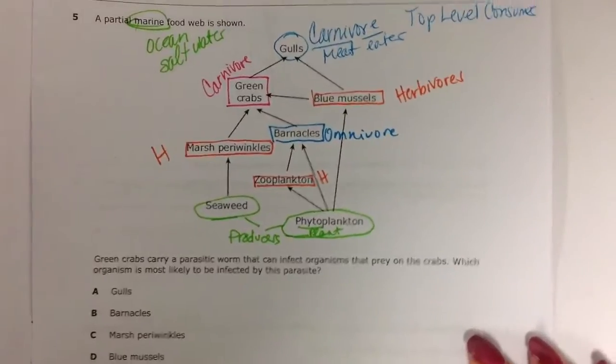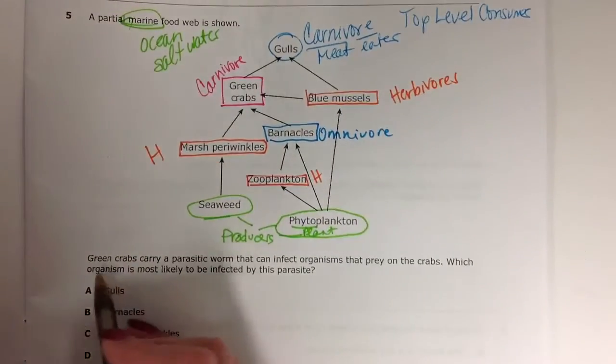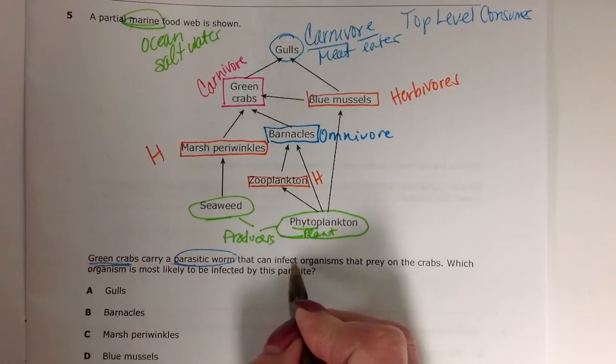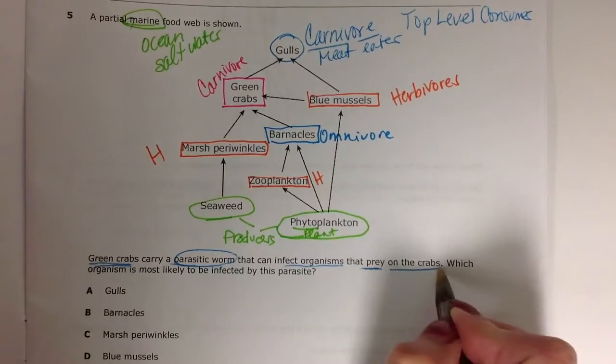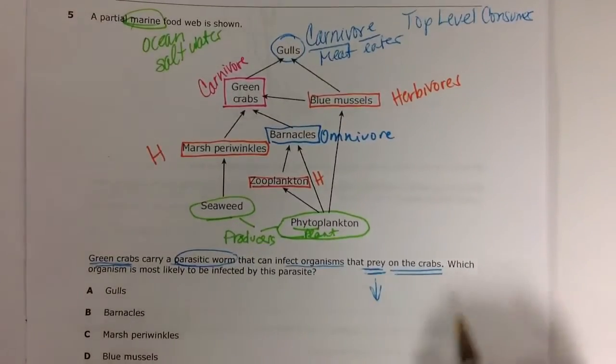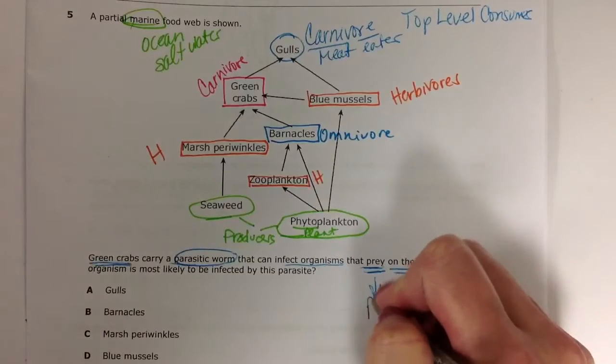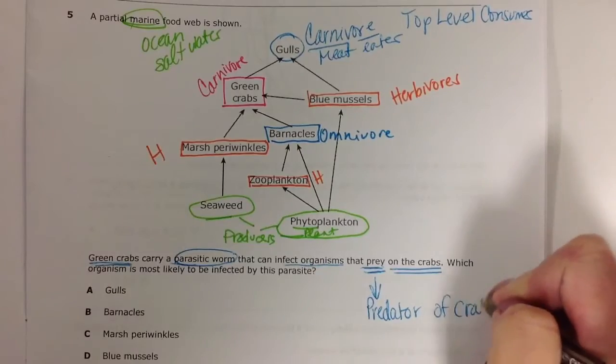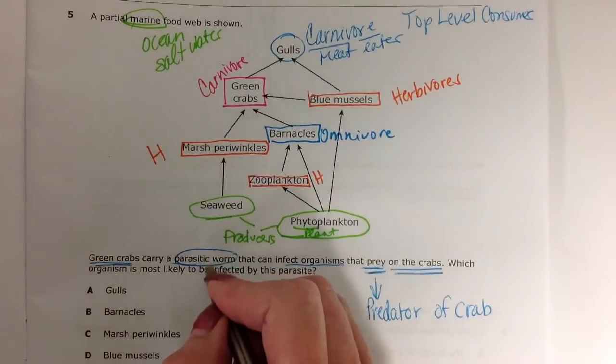So let's read the question and see what they would like to know from us. It says, green crabs carry a parasitic worm that infects organisms that prey on the crabs. That's real important. So whoever preys on the crabs, meaning the predator of the crab, will be affected by whatever this worm is.